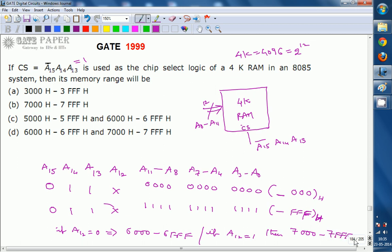So this is the address range for the given RAM chip. It can be either 6000h to 6FFFh as well as 7000h to 7FFFh depending on A12, because A12 is not given. So it can be either zero or one. If you take A12 as zero, 6000h to 6FFFh. Otherwise, if it is one, 7000h to 7FFFh. So the memory range is option D, the right option for this one. Thank you.